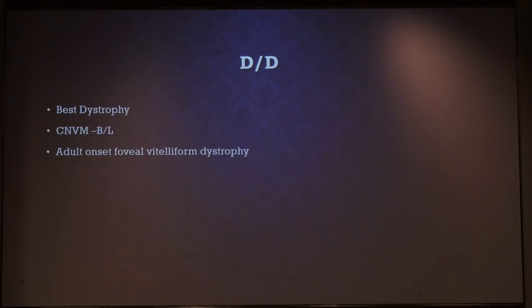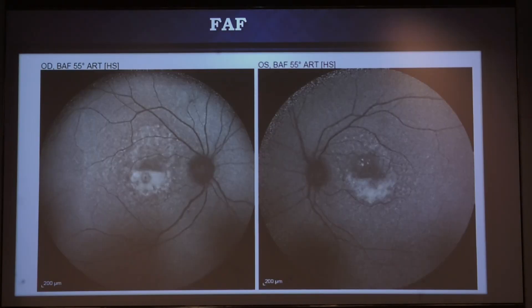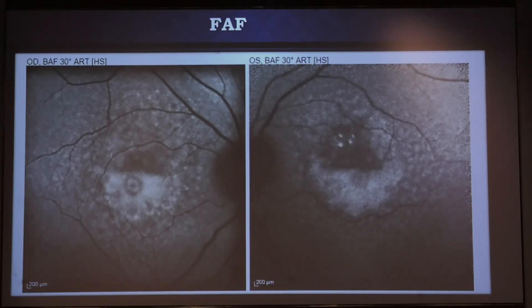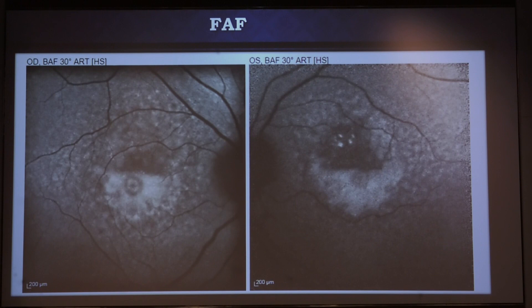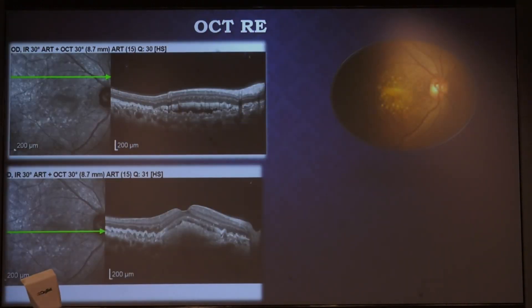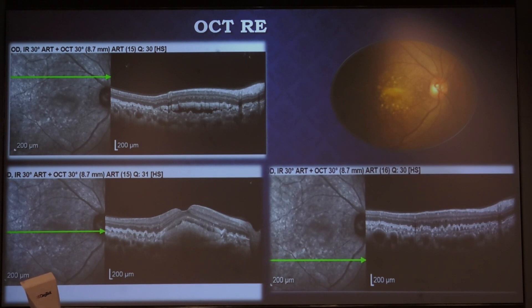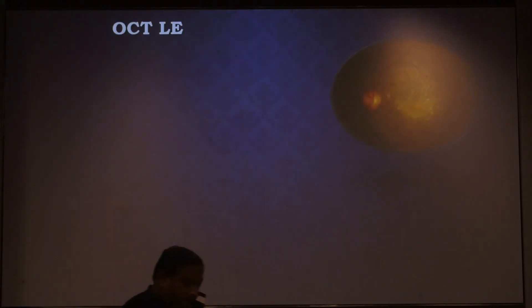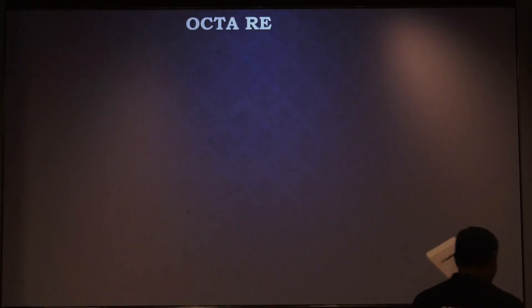On the basis of this, a differential diagnosis of Best dystrophy, bilateral CNVM, or adult onset foveal vitiliform dystrophy was made and the patient was further investigated. On fundus autofluorescence, as we can see here, there was hyper-autofluorescence, and on OCT in the various sections, cavitation was seen along with sub-retinal hyper-reflective material with drusenoid PEDs. Similar features were seen in the left eye.